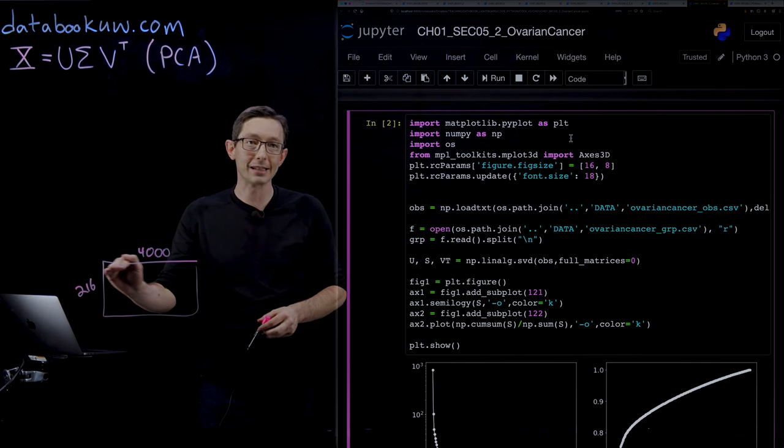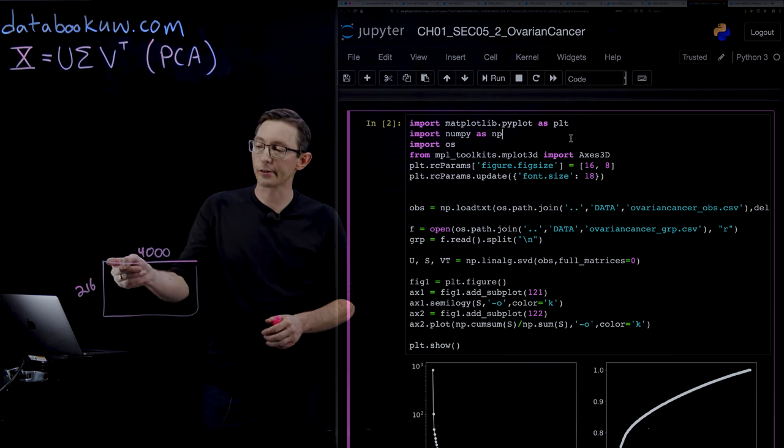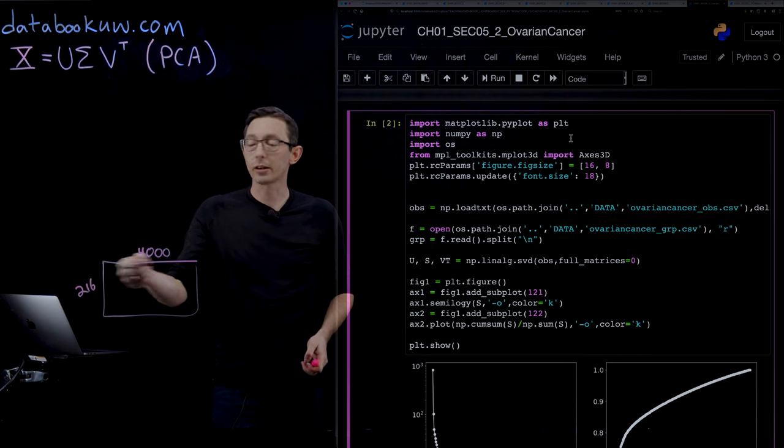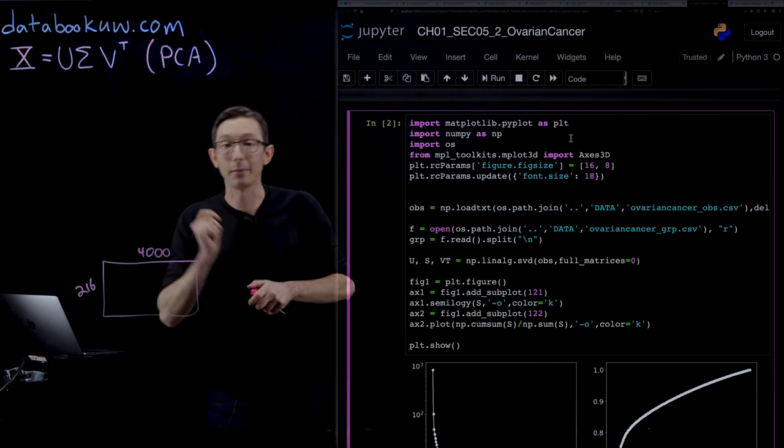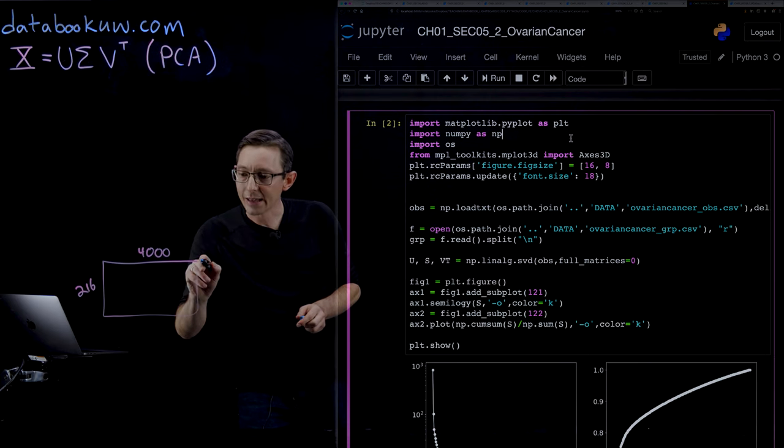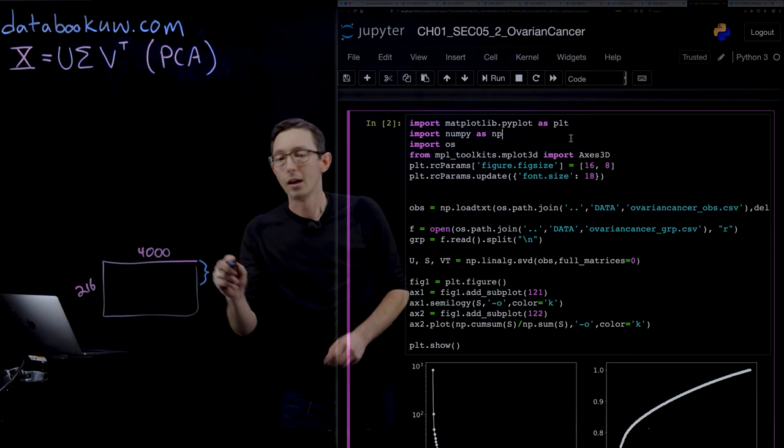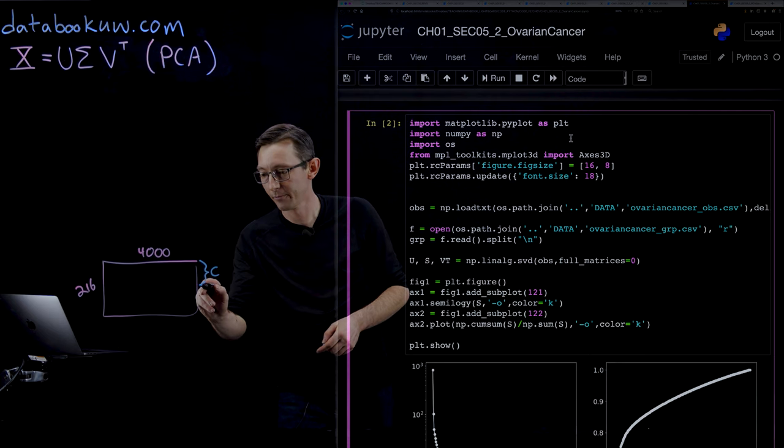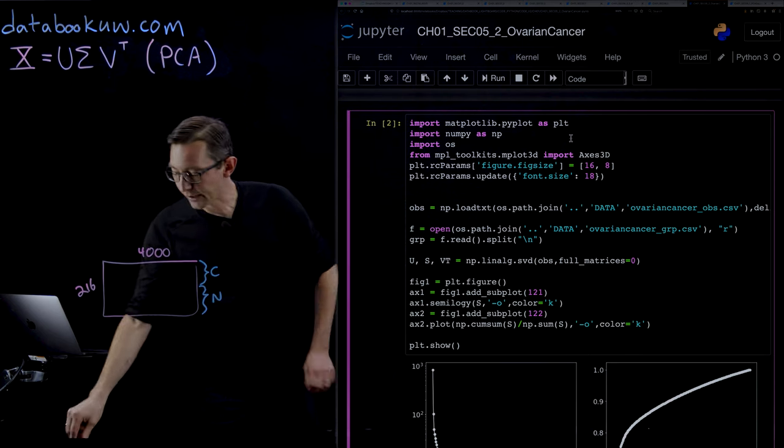You have a 216 by 4,000 sized matrix. The 216 dimension represents 216 individual patients, and the 4,000 dimension represents 4,000 genetic markers measured for every single patient. These patients are broken up into groups, so the first half have ovarian cancer and the second half have no cancer.